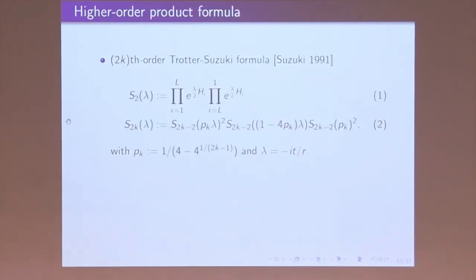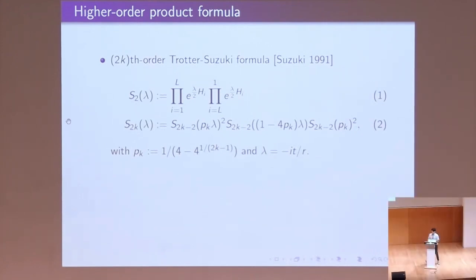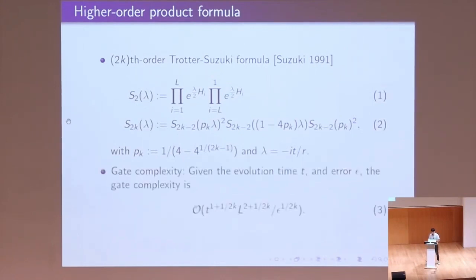For the higher-order product formula, we can use an iterative approach to construct the higher-order terms. Starting from the second order, we can iteratively construct the fourth order, sixth order, and higher orders. This iterative approach improves the gate complexity in terms of T, L, and epsilon.